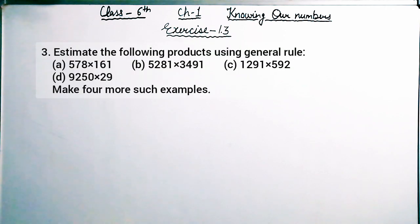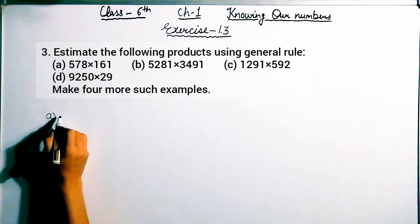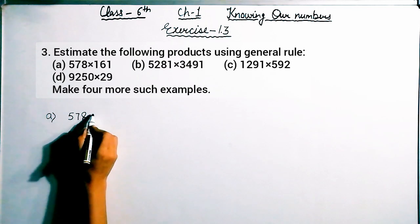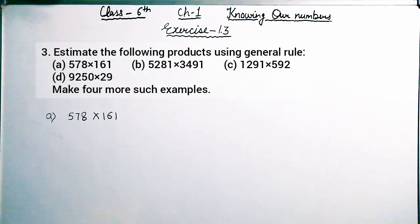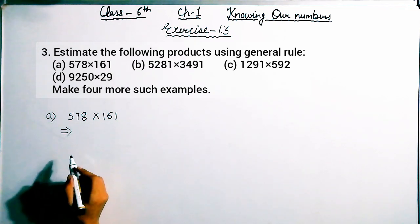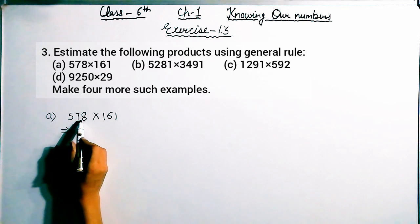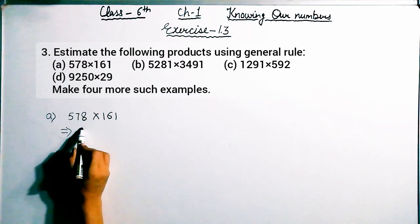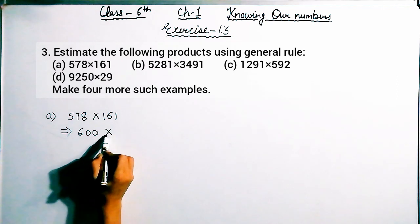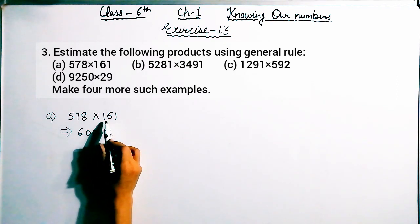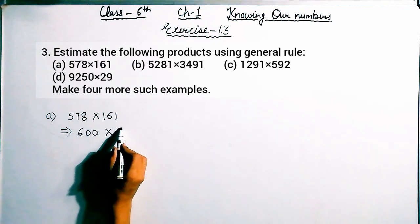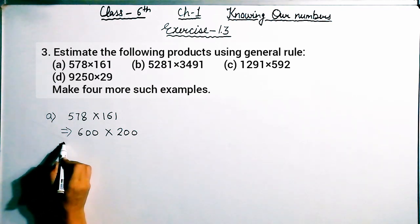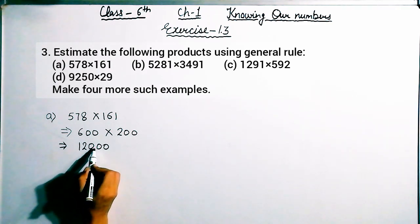Now see question number 3 on the upper screen: estimate the following products using general rule. I am doing the first part. The given number is 578 multiplied by 161. First we round off, then find the product. 578 is a three-digit number, counted in hundreds. 578 lies between 500 and 600, more nearest to 600, so rounding off is 600. 161 lies between 100 and 200, more nearest to 200, so rounding off is 200. The resultant product is 1,20,000.